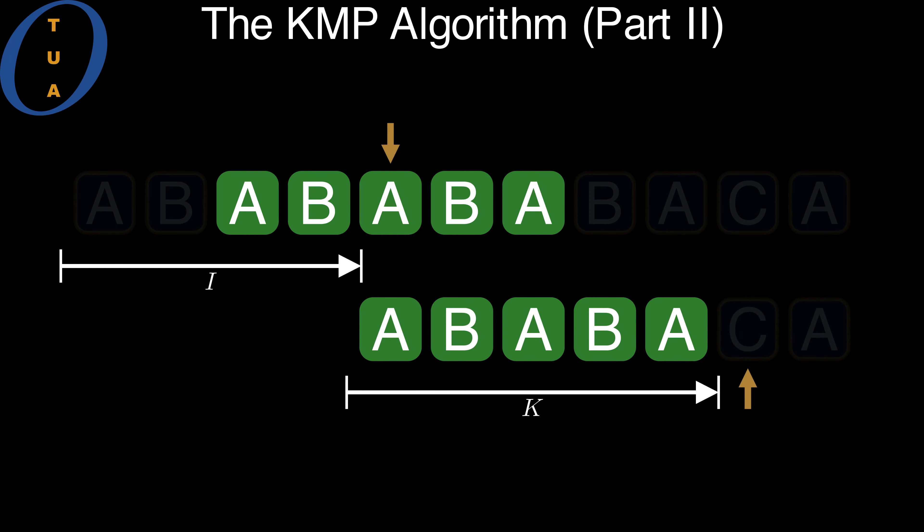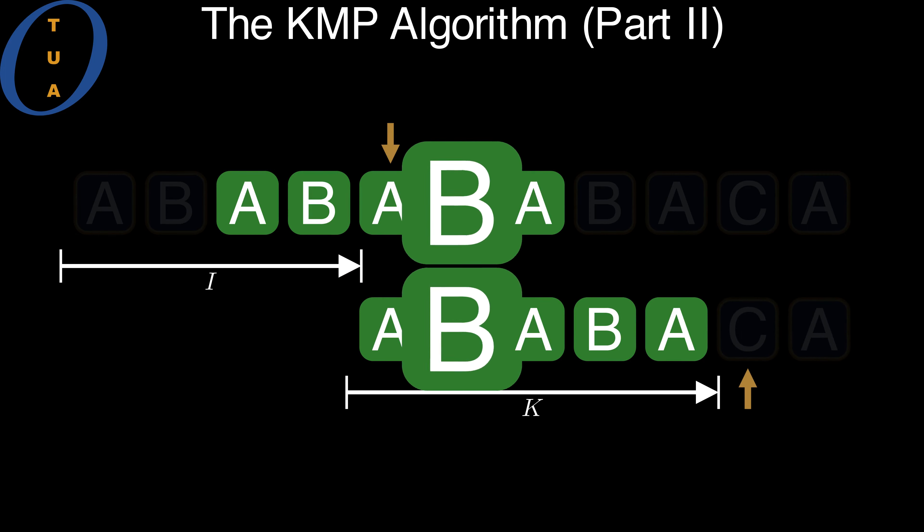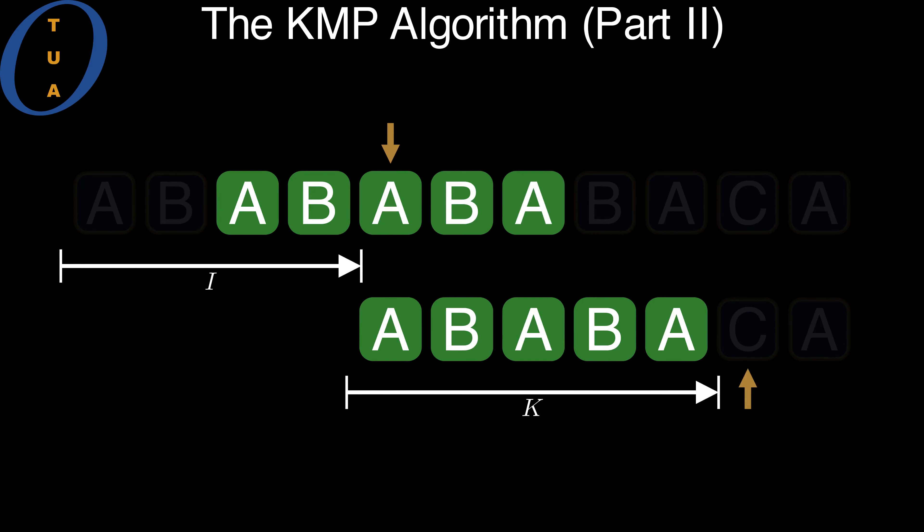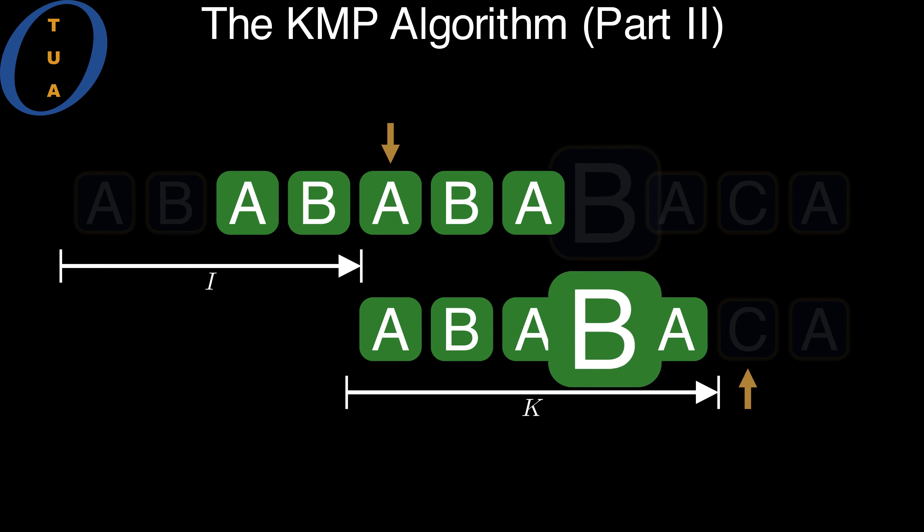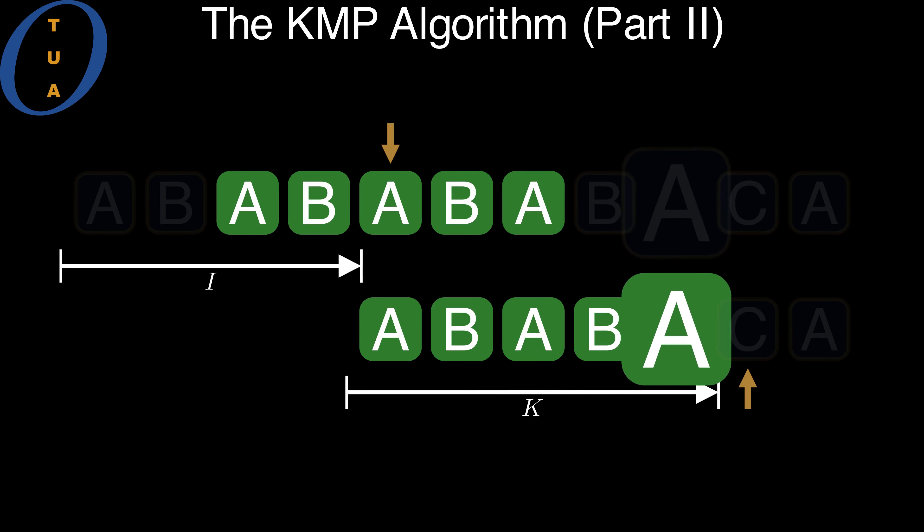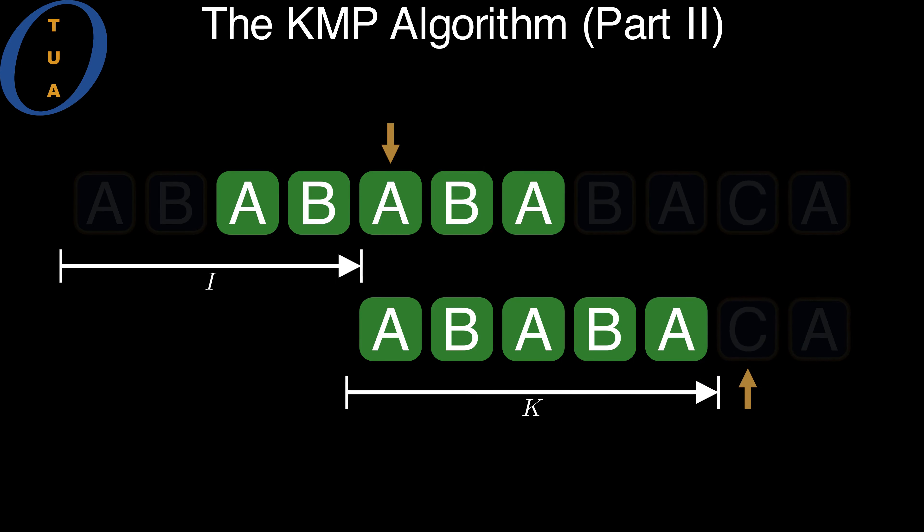In the offset after that, all of the aligned symbols in the overlap are the same. Therefore, for all we know, this offset could be a match. This means that it should be investigated further, and therefore KMP goes to this offset.